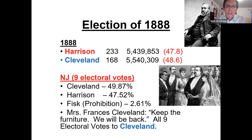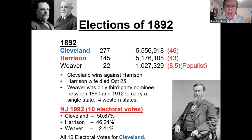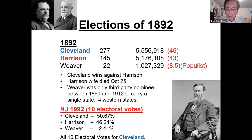As the Clevelands were leaving the White House, Francis Cleveland said to the staff, 'Keep the furniture, we'll be back.' And four years later, Cleveland came back and won with a 46% victory over Harrison. What helped him was third-party candidate Weaver, who got 22 electoral votes. Harrison's wife also died during the election. Weaver is the only third-party nominee between 1860 and 1912 to carry a single state — he had four Western states, very unusual even compared to third-party candidates in the 20th century. In all these Cleveland elections, New Jersey went for Cleveland — he was definitely their man.